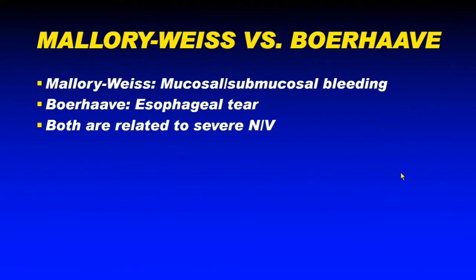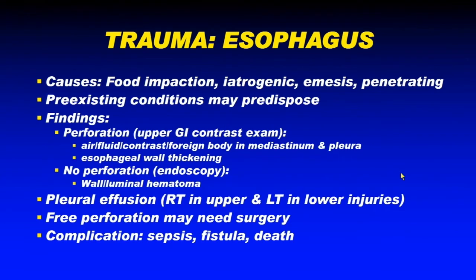Regarding the difference between Mallory-Weiss and Boerhaave: Mallory-Weiss is a very superficial mucosal or submucosal bleeding resulting in hematoma, whereas Boerhaave involves a through-and-through esophageal tear with a lot of pneumomediastinum. Both are related to severe emesis episodes. Causes of esophageal trauma include food impaction, medical procedures, severe nausea and vomiting, and — depending on where you practice — penetrating injuries. Pre-existing conditions such as esophagitis or strictures, benign or malignant, may predispose patients to esophageal perforations.